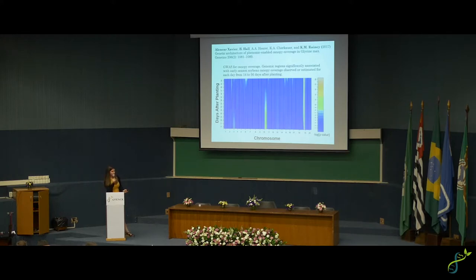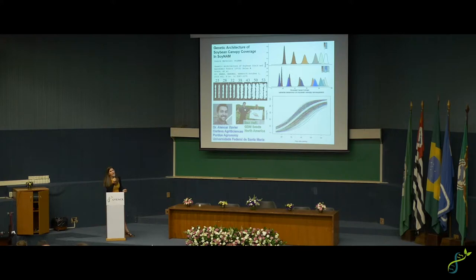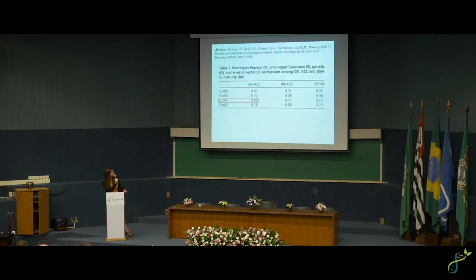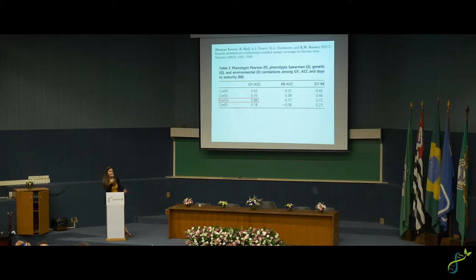Another theme is the high genetic correlation to yield from average canopy coverage, which Elaine Carr showed using the indirect selection equation — demonstrating it would be more efficient to select on canopy coverage than directly on yield. When asked if that's really true, yes, the number is pretty high. Part of this is because there's a wide range of maturity in SoyNAM — three or four weeks range.